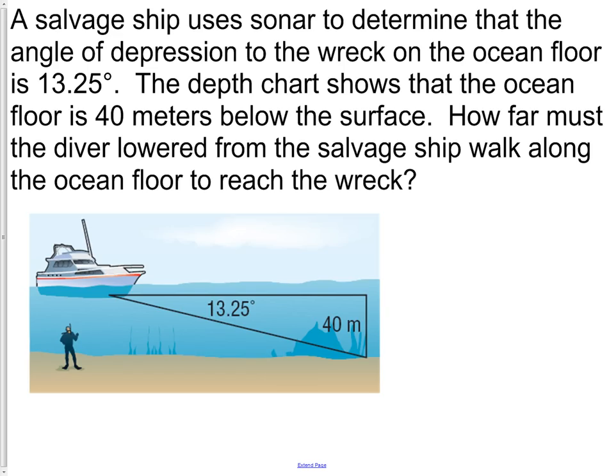Let's look at an example problem. A salvage ship uses sonar to determine that the angle of depression to the wreck on the ocean floor is 13.25 degrees. The depth chart shows that the ocean floor is 40 meters below the surface. How far must the diver lowered from the salvage ship walk along the ocean floor to reach the wreck? As we look at this, the sonar looks straight ahead from the ship and is measuring down at 13.25 degrees in front of the ship. We know the salvage is 40 meters below.